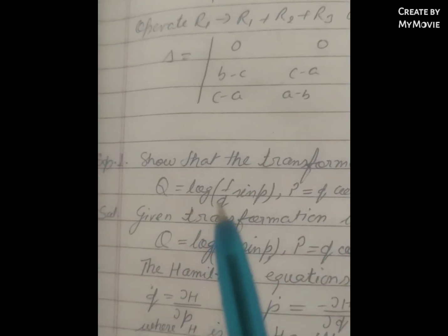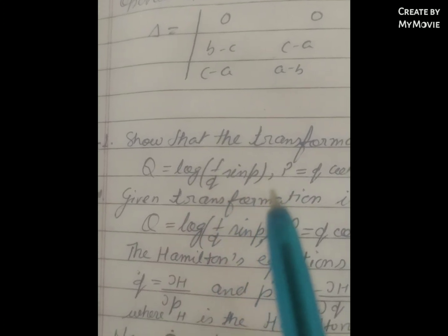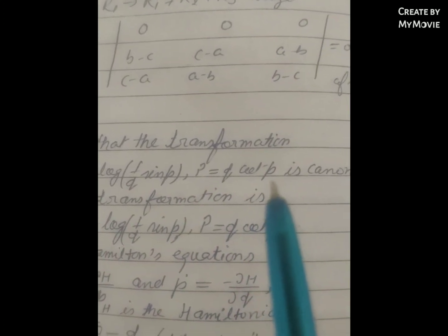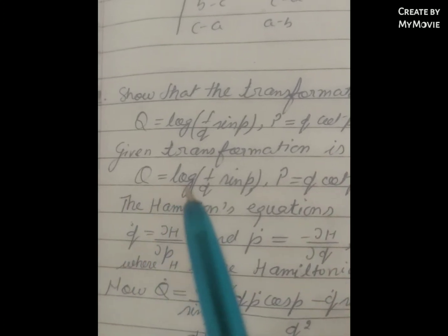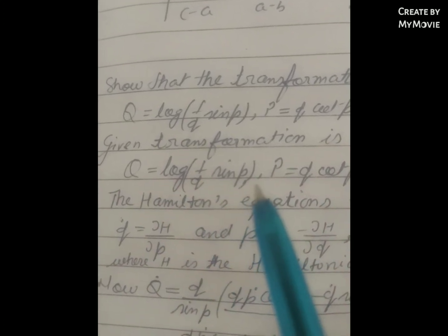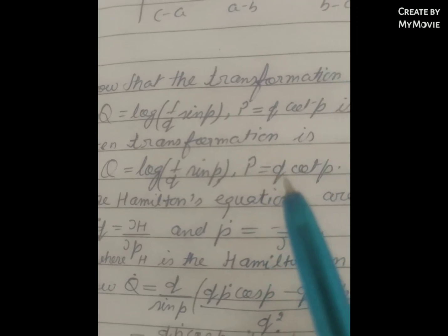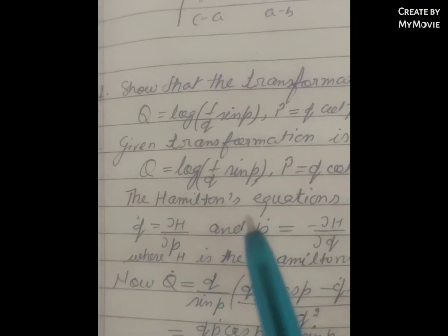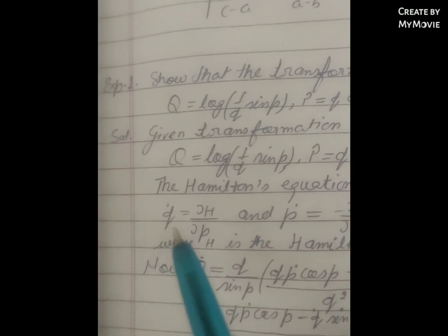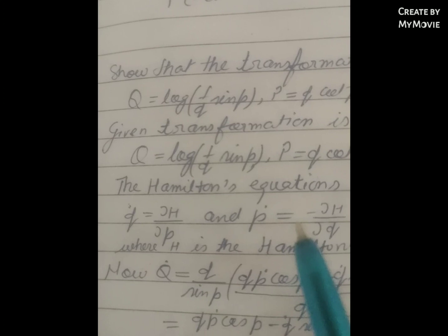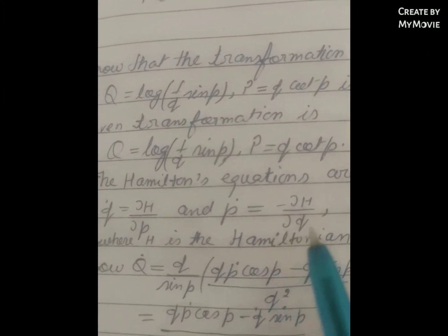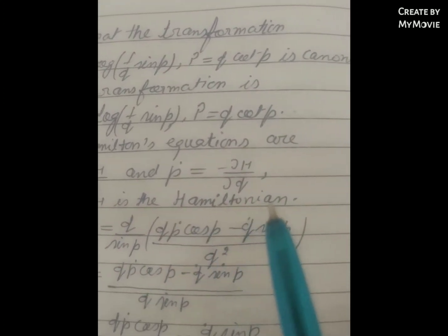Show that the transformation Q is equal to log bracket 1 upon q·sin(p) and P is equal to q·cot(p) is a canonical transformation. The given transformation is Q = log(1/(q·sin p)) and P = q·cot(p). Hamilton's equations are Q̇ = ∂H/∂P and Ṗ = −∂H/∂q, where H is the Hamiltonian.